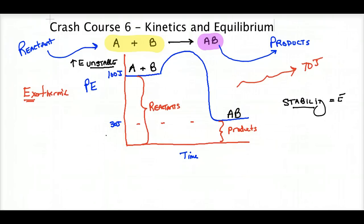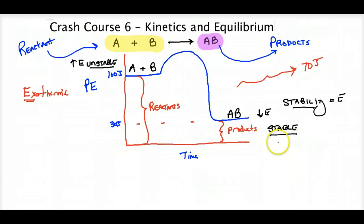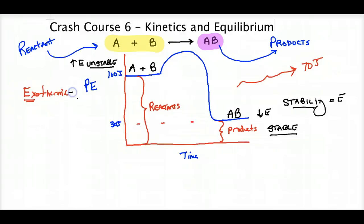Products with low energy are stable. If you're stable, you stay in that position unless somebody adds a lot of energy to change it. That means you have strong bonds — to break those bonds you would need significant energy. So exothermic reactions produce unstable reactants that could burn or explode, and they produce stable products that stick around.